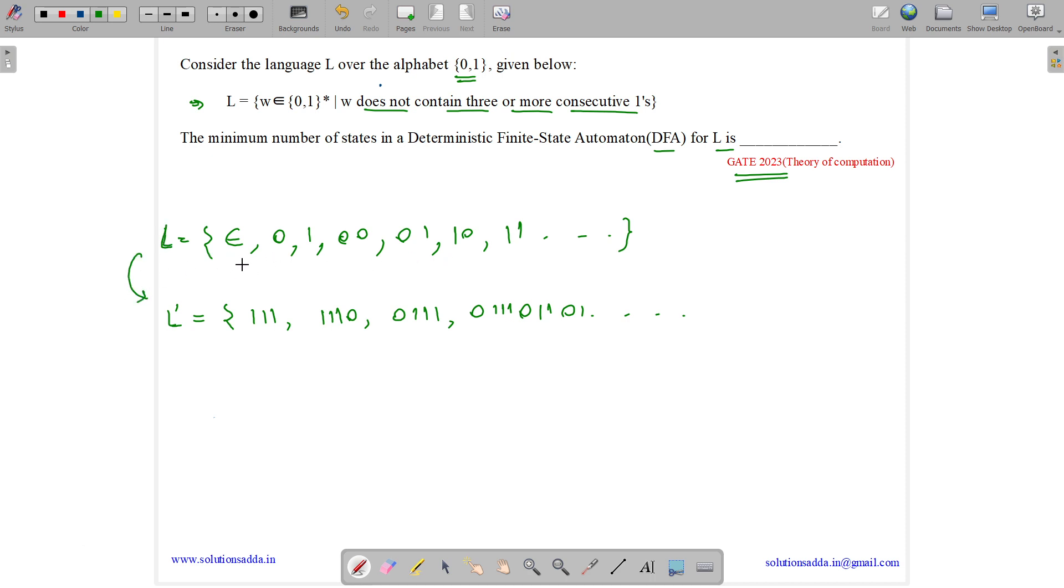Thinking about L is more difficult, but thinking about L complement is easier. So let's draw the DFA for L complement. What is L complement? L complement is the set of W that contain 3 or more consecutive ones.